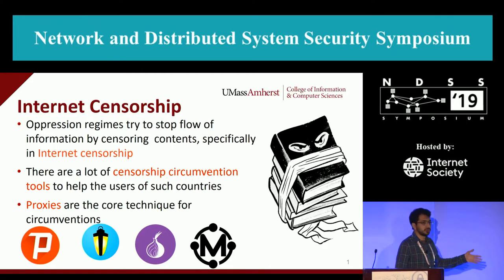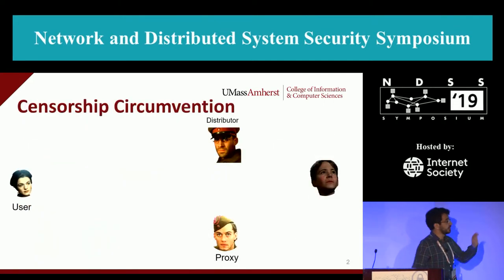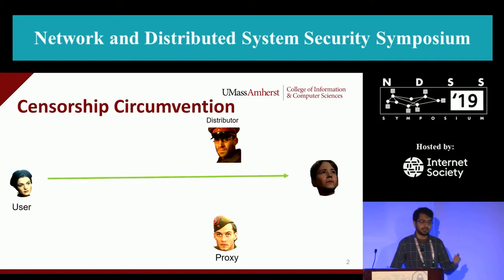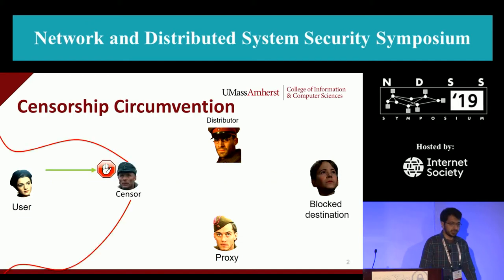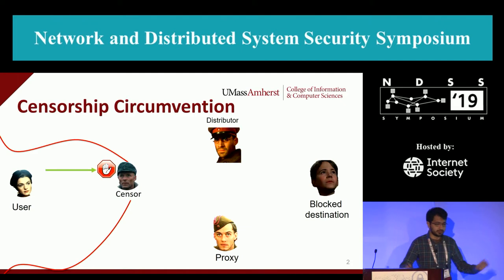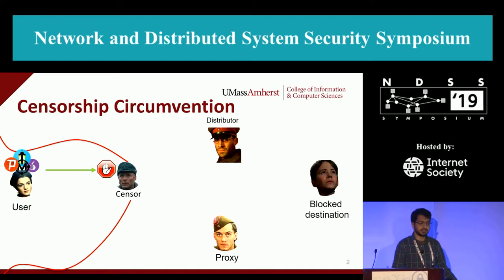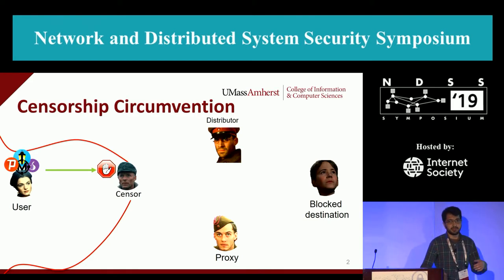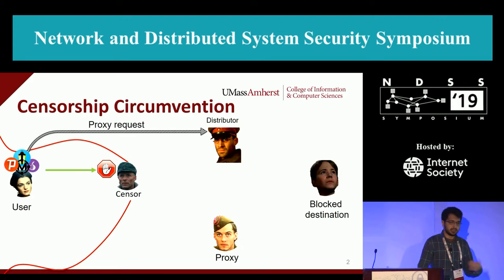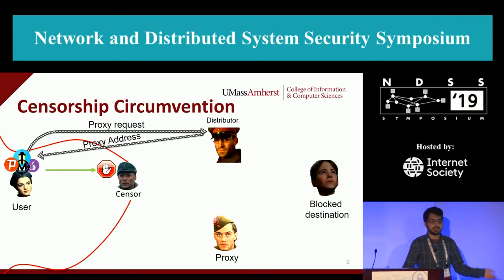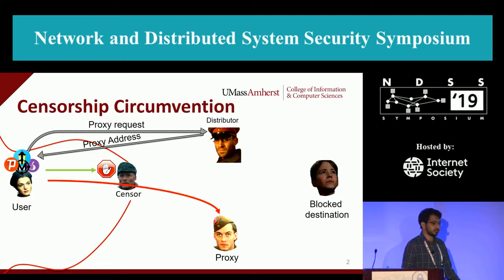There are many tools such as Tor, Siphon, and others. In the basic idea of proxy censorship tools, you have a user which is connected to a destination on the Internet. These censorship circumvention tools have a back-end which has a list of proxies. The user issues a request, gets a proxy address, and then connects to that proxy to reach the blocked destination.